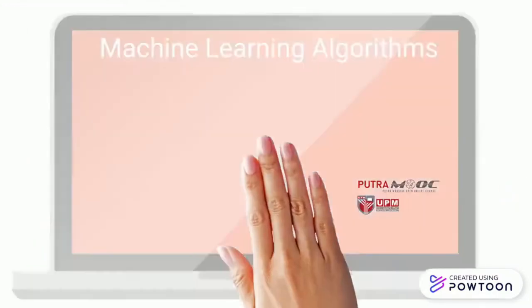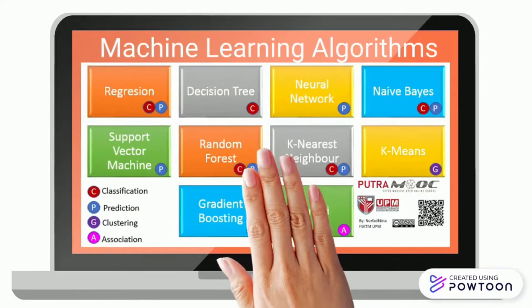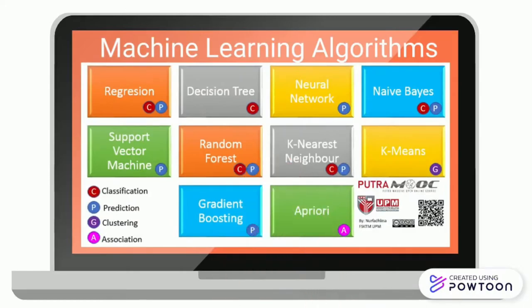The screen shows the names of machine learning algorithms based on their types, by classification, prediction, clustering, or association.